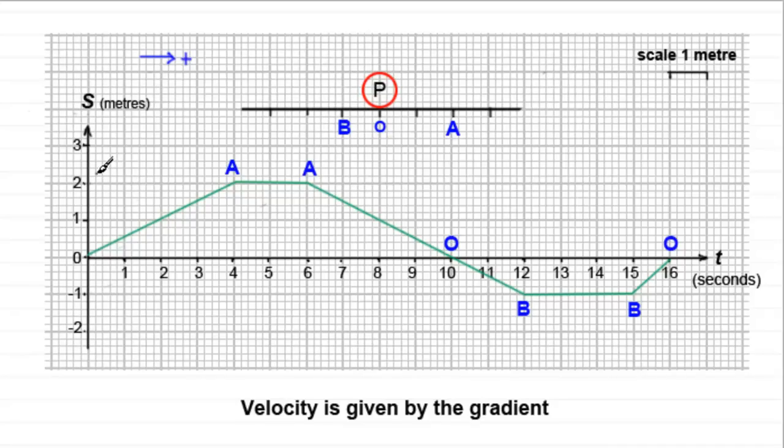Let's just write that in, that V equals 0.5 metres per second, and it's to the right in that direction. Its speed is going to be half a metre per second, but velocity, remember, involves direction.